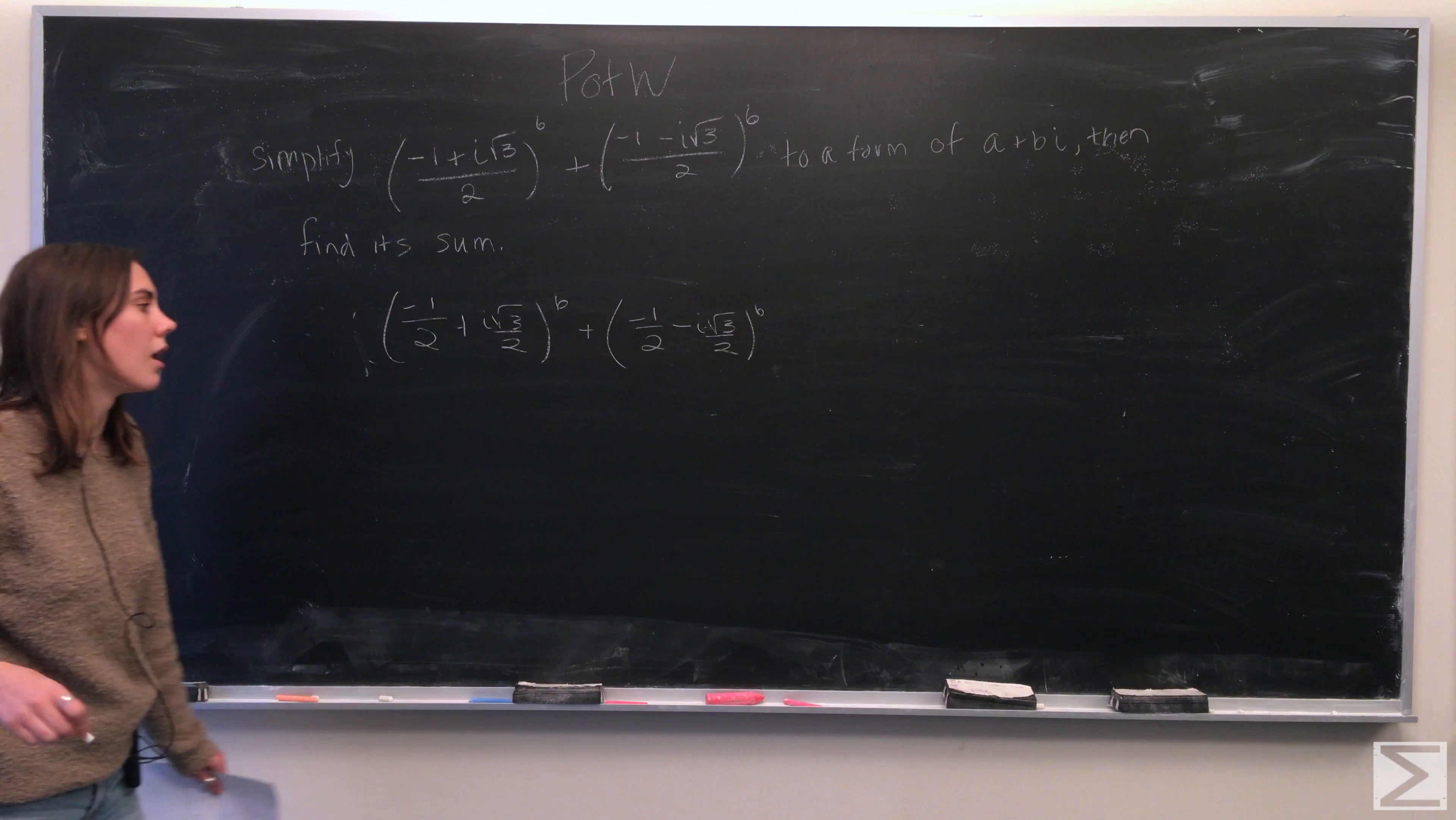So what we come out with is cosine 6 times 2 pi over 3 plus i sine 6 times 2 pi over 3 plus cosine 6 times 4 pi over 3 plus i sine 6 times 4 pi over 3. And then we can simplify that just by reducing the fractions within this.